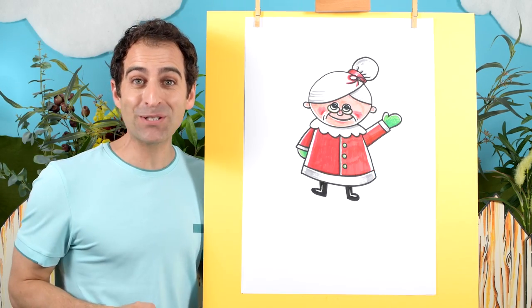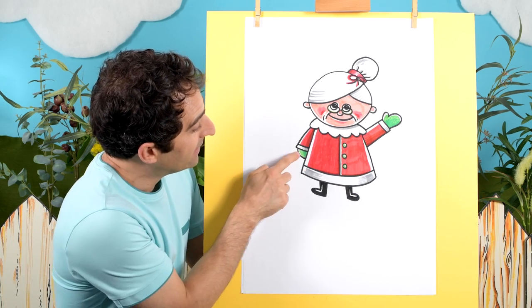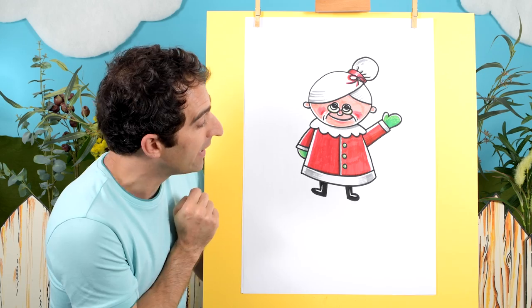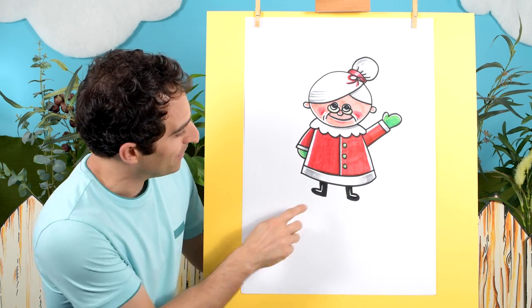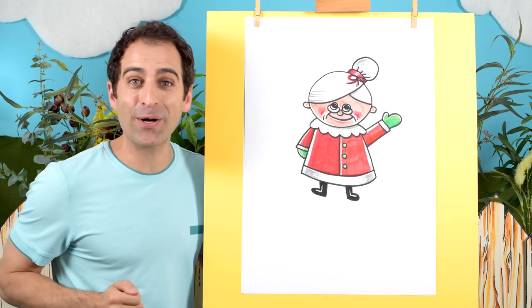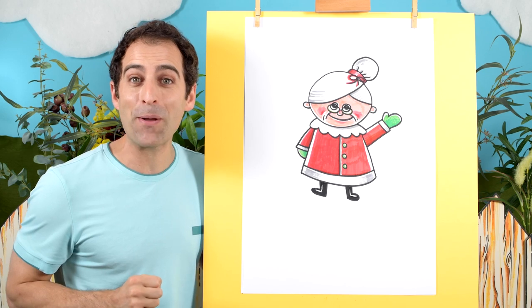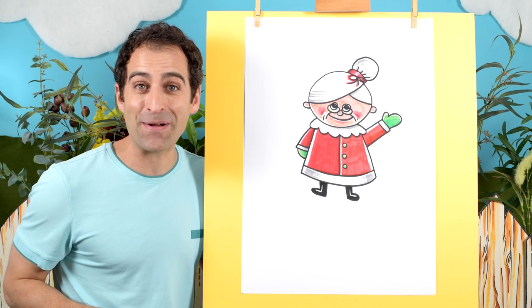And there we go. Our Mrs. Claus is all colored in. I've used red for her outfit here. She's got bright green gloves on and bits of grey here and there just to make it look a little bit more 3D. And some nice little black boots. That was a lot of fun. I hope you enjoyed it. Please subscribe to the channel so you don't miss out on the next drawing lesson. Have fun. Keep practicing. I'll see you next time. Bye.